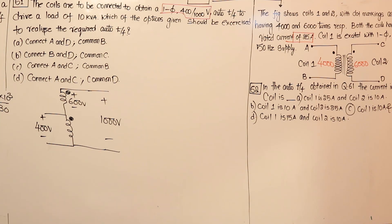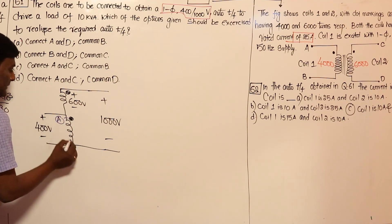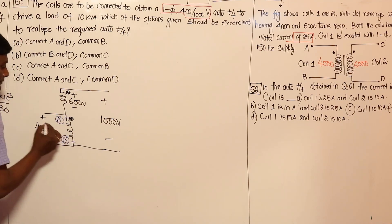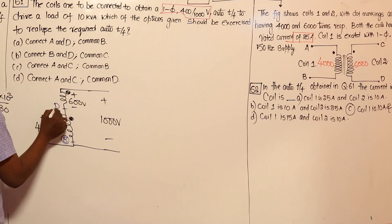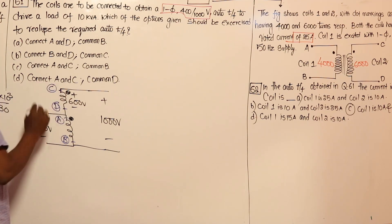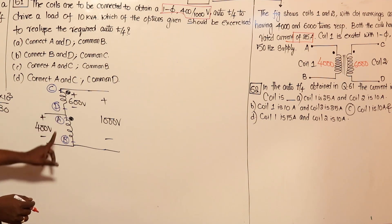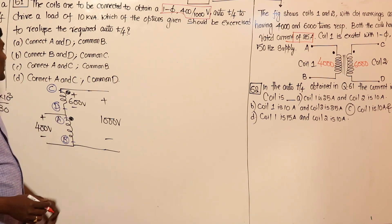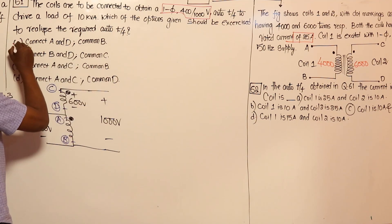For the connection diagram: terminal a and b are given for coil 1 (the 400V side), and for the second coil, the undotted terminal is d and the dotted terminal is c. To form the additive auto transformer connection, we connect terminals a and d together, and b is the common terminal.